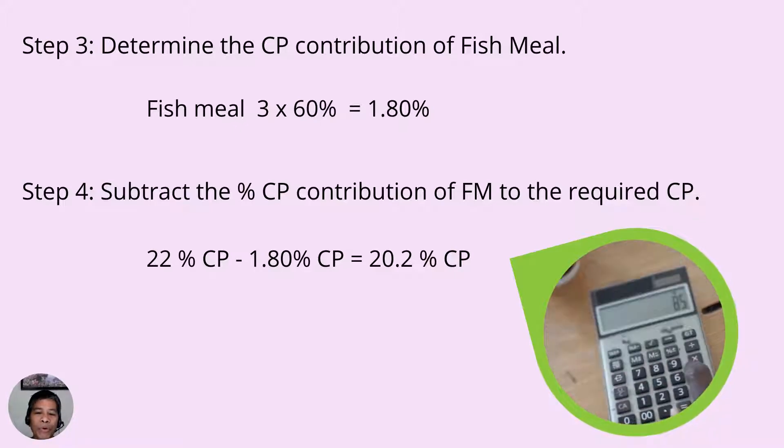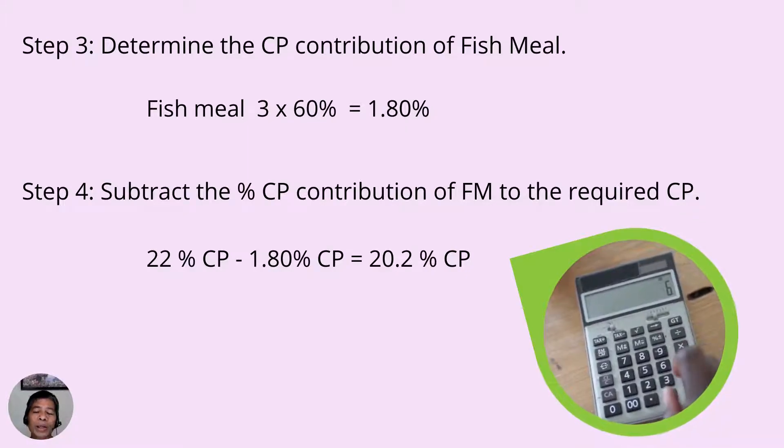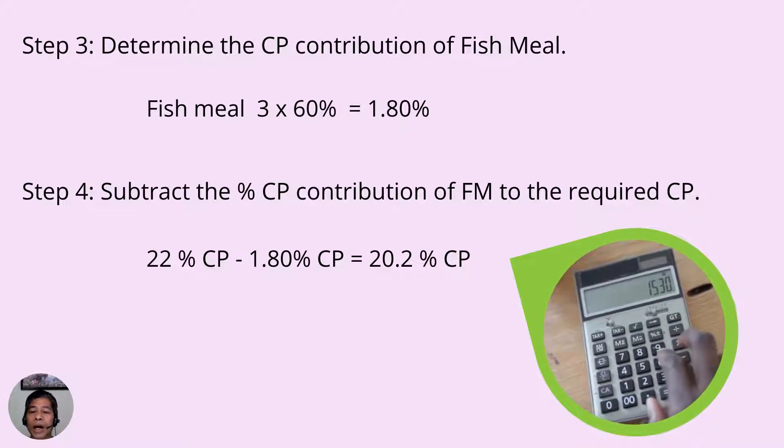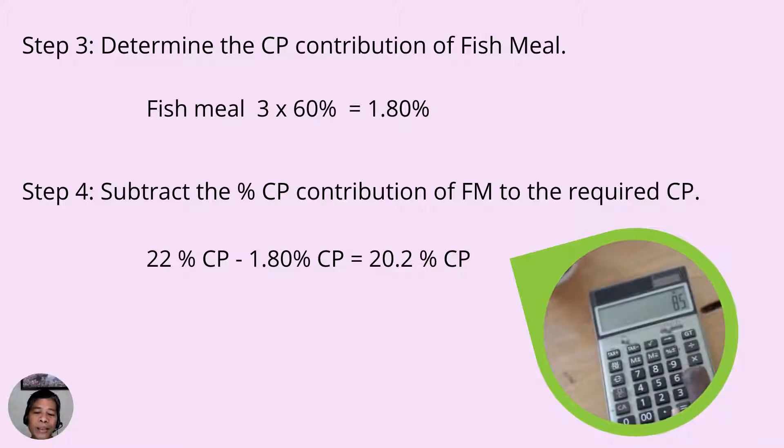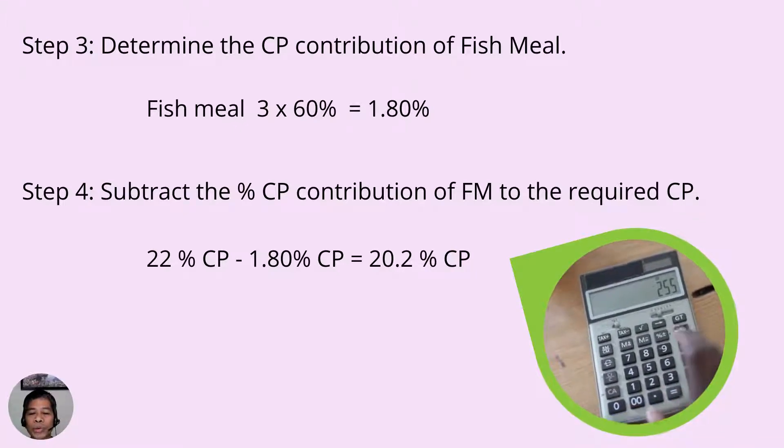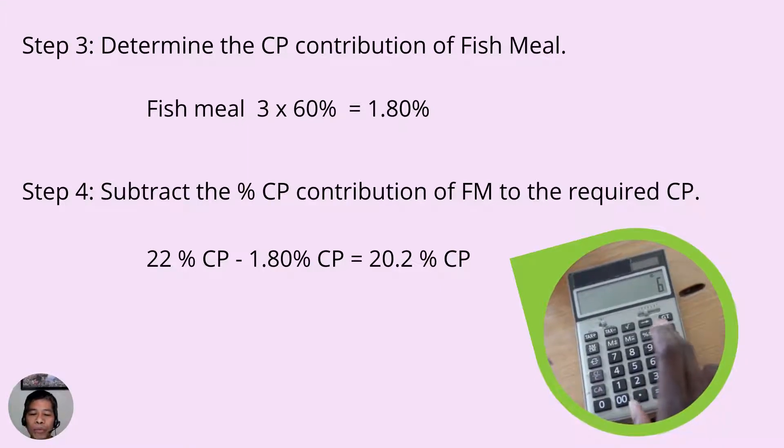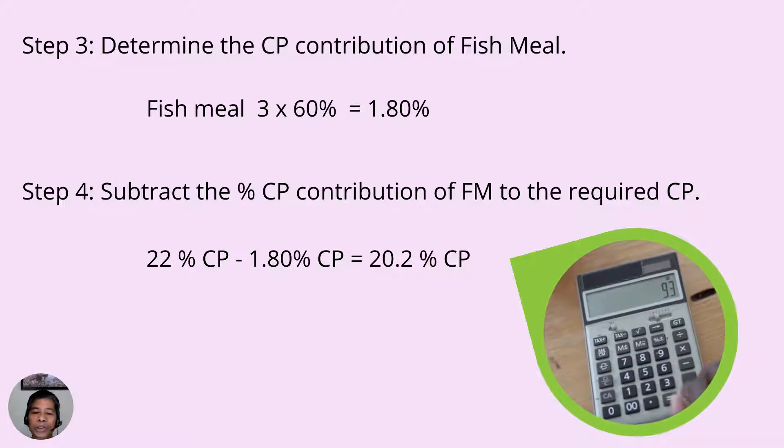In step number 4, we will subtract the CP contribution of fish meal to the required CP which is 22% as mentioned earlier. So 22 minus 1.8 will give you 20.2% CP. This is the amount of protein that must be supplied by the combination of corn and soybean meal.